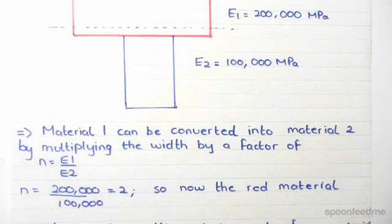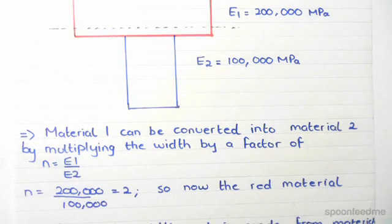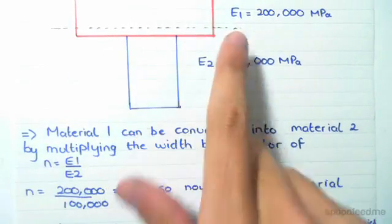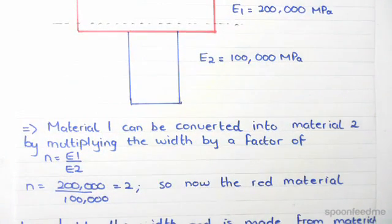This equals 2, so now the width of the red material since we transformed it is double what it was. We do 2 times the original width, and now the whole thing is just made out of material 2. Let me repeat myself: